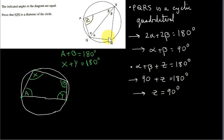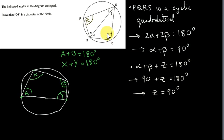And similarly, the triangle down here is similar to this triangle — two of the angles are the same, so the third angle is automatically the same. If this angle is Z, then this angle down here is also Z, and Z is 90 degrees.